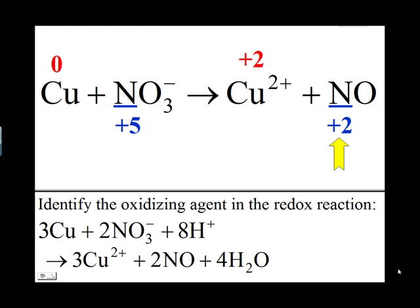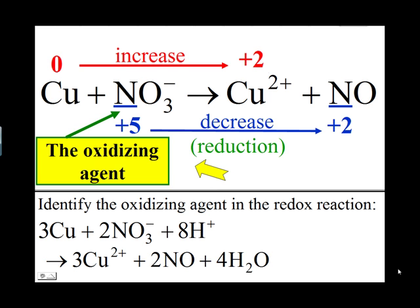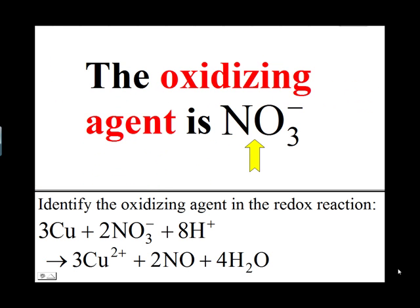The oxidation number of copper has gone from zero to plus 2, which is an increase. The oxidation number of nitrogen has gone from plus 5 to plus 2, which is a decrease. A decrease in oxidation number is called reduction, and the species undergoing reduction is the oxidizing agent, which in this case is NO3 minus. So, the oxidizing agent in this equation is NO3 minus.